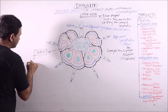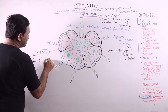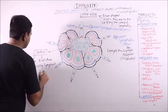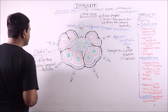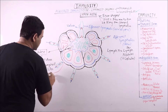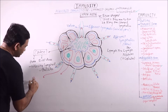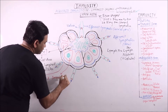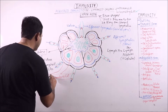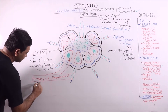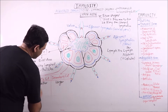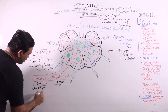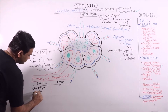The cortex is the outer region and it is the B cell area. It contains follicles, that is lymphoid follicles, which are of two types. Primary lymphoid follicles are smaller in size, while secondary follicles are larger in size. Primary follicles are present when antigen interaction has not occurred.